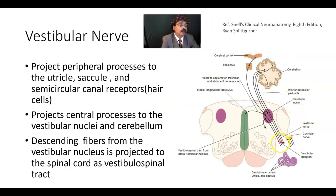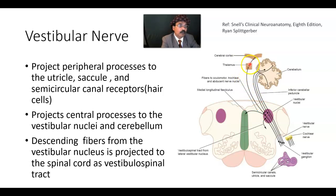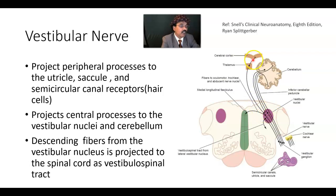Regarding the vestibular pathway: from the vestibular nuclei, fibers go to the thalamus, which has the ventral posterior inferior nucleus and also the ventral lateral nucleus. Through these nuclei, the third-order neuron goes to the cerebral cortex — to area number two, in the lower part of the postcentral gyrus, just above the superior temporal gyrus area. So: first-order neuron in the vestibular ganglion, second-order neuron from the vestibular nuclei to the thalamus, and third-order neuron from the thalamus to area two of the postcentral gyrus.